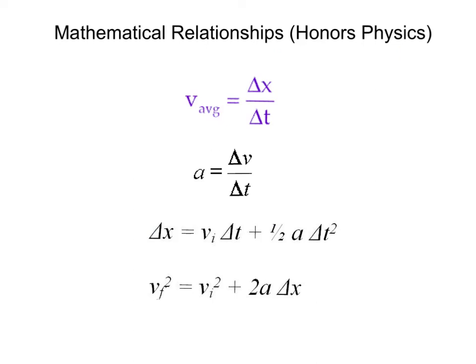So here are the mathematical relationships for honors physics. The first one just being a definition of velocity, which is just distance over time. Remember, this is strictly for constant velocity motion.